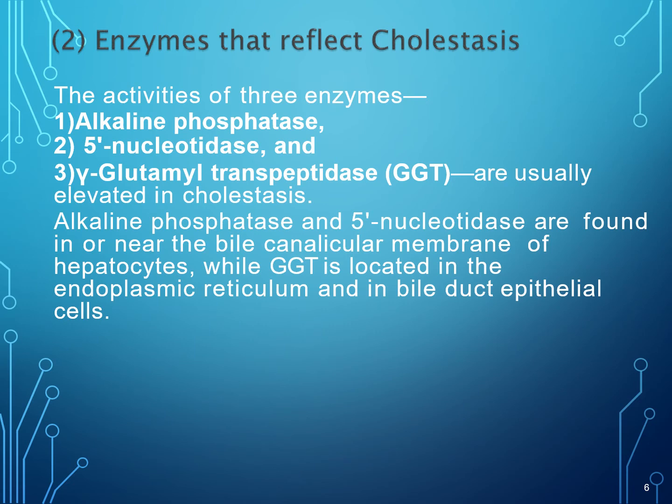The enzymes that reflect cholestasis: cholestasis is a condition in which the flow of bile from the liver is stopped or slowed down. The activity of three enzymes — alkaline phosphatase, 5'-nucleotidase, and gamma-glutamyl transpeptidase — are usually elevated in case of cholestasis.